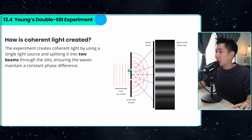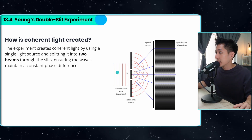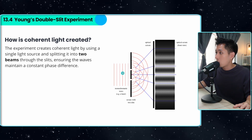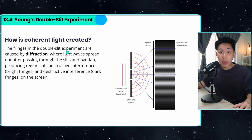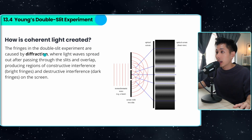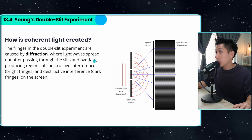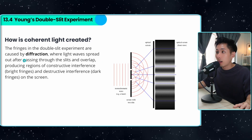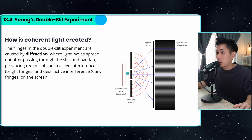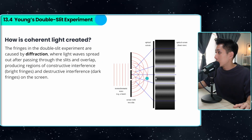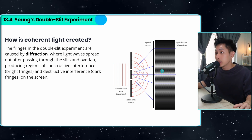This is how we set up the experiment. You have a monochromatic light source with two gaps. The fringes in the double slit experiment are caused by diffraction, where light waves spread out after passing through the slits and overlap, producing regions of constructive and destructive interference.